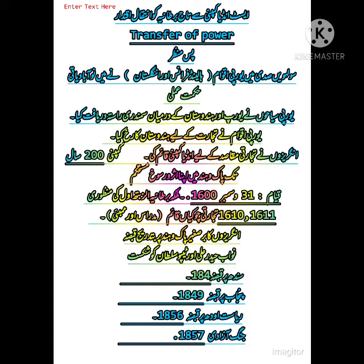در حقیقت یہ لوگ تجارت کی غرض سے ہندوستان آئے تھے اس لیے انہوں نے یہاں اپنی ایک تجارتی کمپنی قائم کی جس کا نام East India Company رکھا۔ یہ وہ کمپنی ہے جس نے دو سو سال تک ہندوستان پر اپنی حکومت قائم رکھی۔ یہ کمپنی 31 دسمبر 1600 کو حکومت برطانیہ کی اجازت سے ہندوستان میں قائم ہوئی۔ اس زمانے میں برطانیہ کی ملکہ الزبت اول نے منظوری دی۔